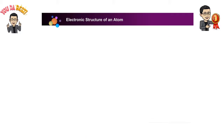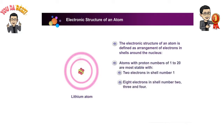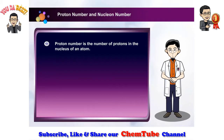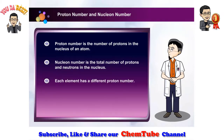Let's summarize our lesson. The electronic structure of an atom is defined as the arrangement of electrons in shells around the nucleus. Atoms with proton number one to twenty are most stable with two electrons in shell one, and eight electrons in shells two, three, and four. Valence electrons are the electrons in the outermost occupied shell. Proton number is the number of protons in the nucleus of an atom. Nucleon number is the total number of protons and neutrons in the nucleus. Each element has a different proton number, and each successive element has one more proton.